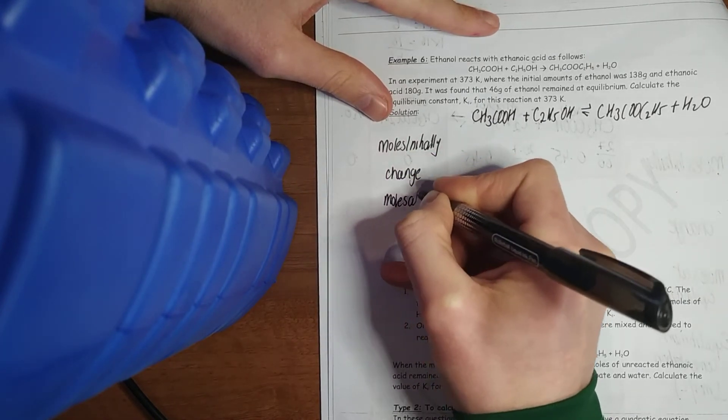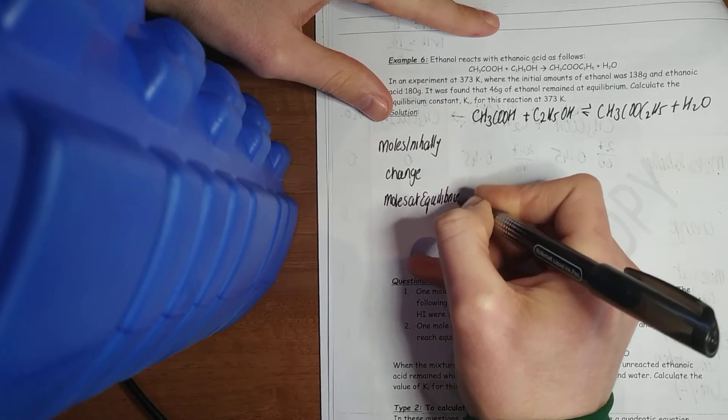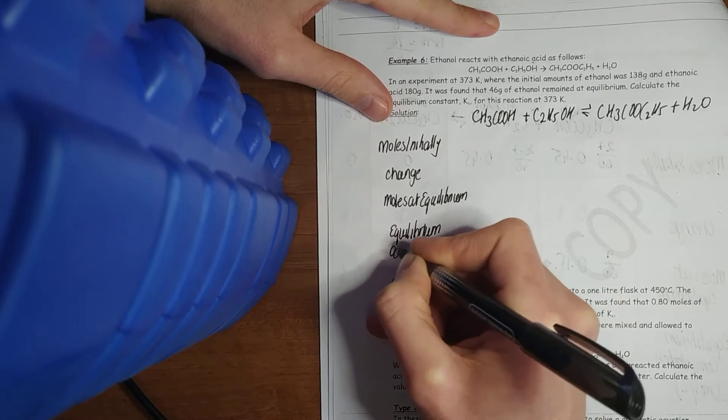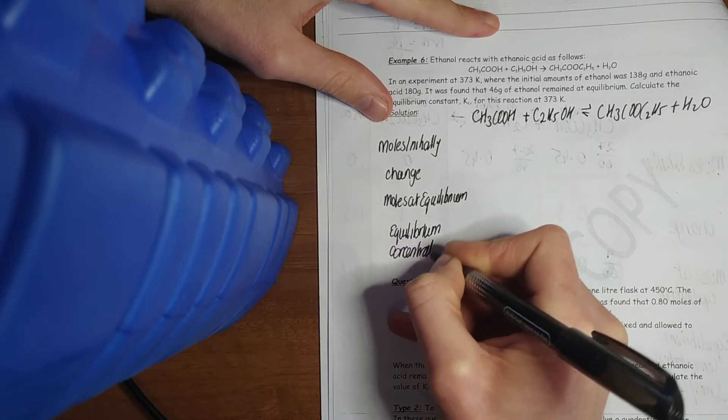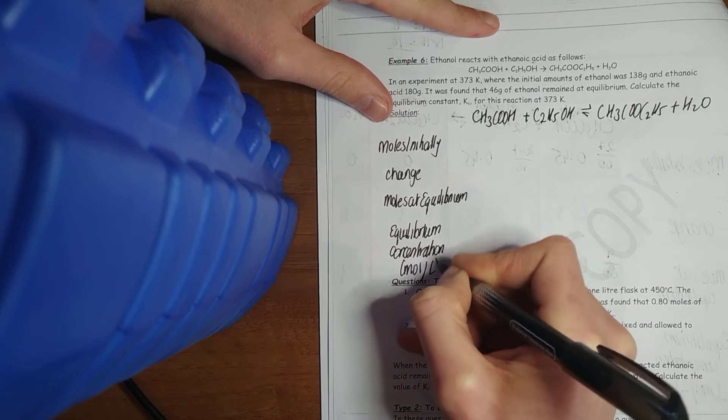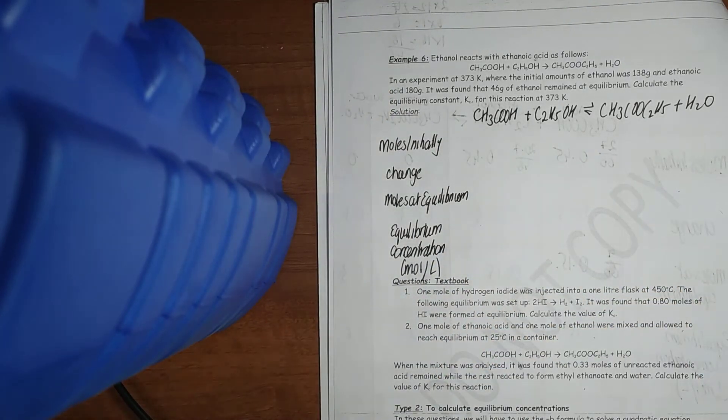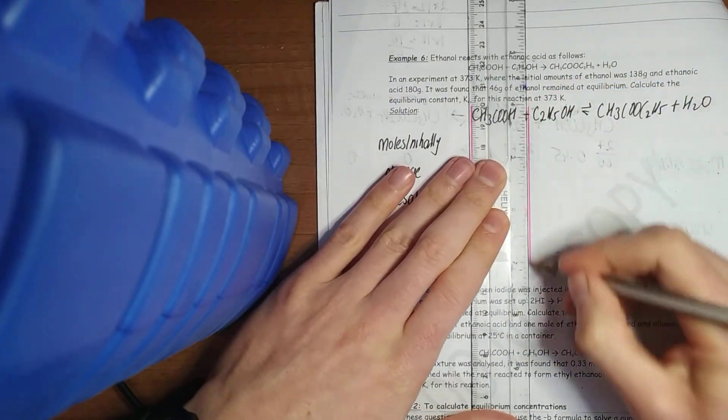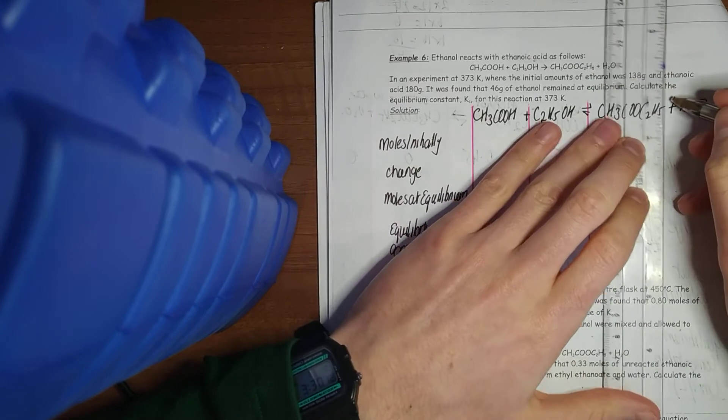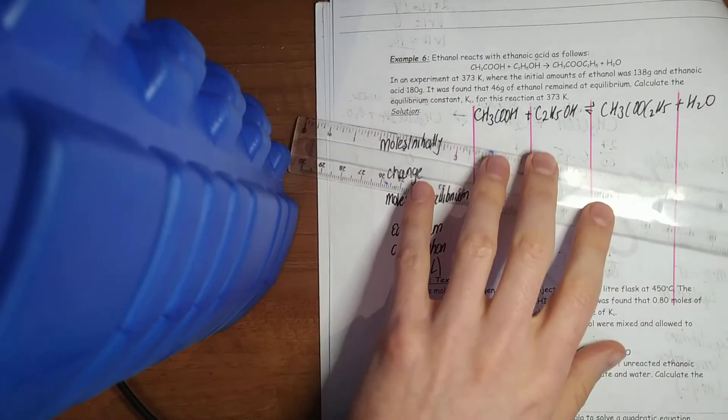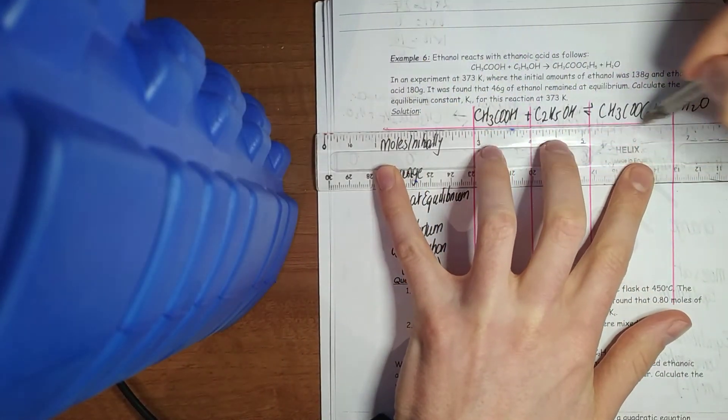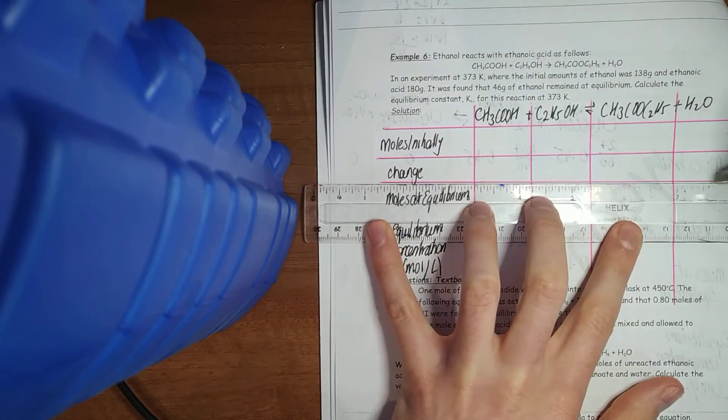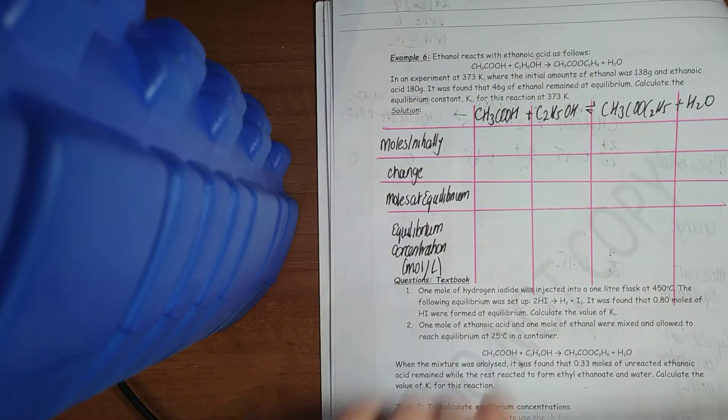Moles at equilibrium. And equilibrium concentration in moles per liter. As I say, I haven't much room in this, but sure. We'll work it out. Draw your grid. As I say, you want to try this? Pause it for yourself. Go through it. I could easily make a mistake myself. Hopefully not. But pause it, try it yourself, and see how you get on. You'll learn far more from doing that, to be honest.